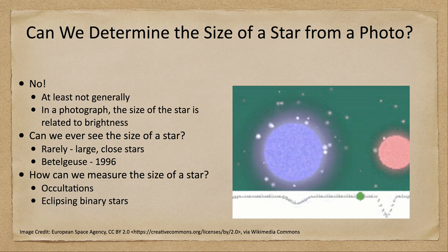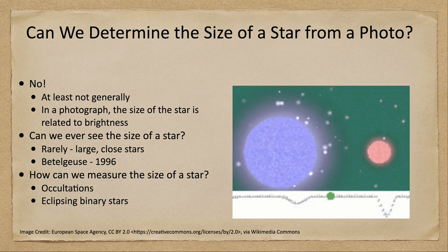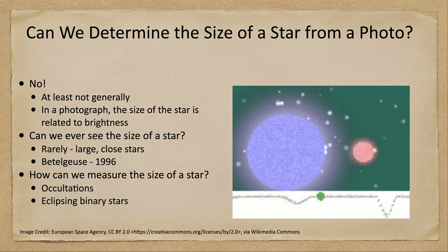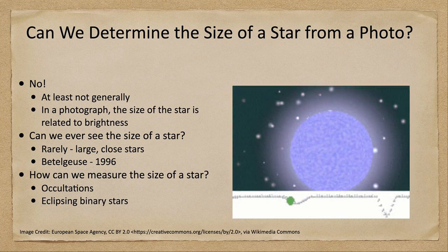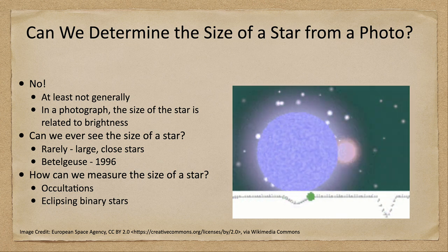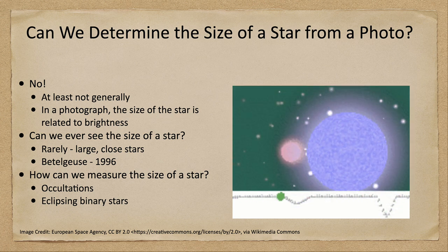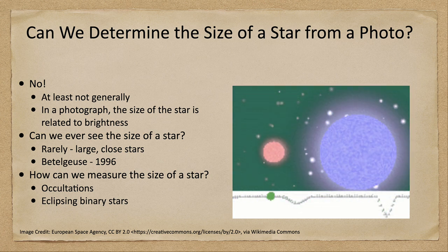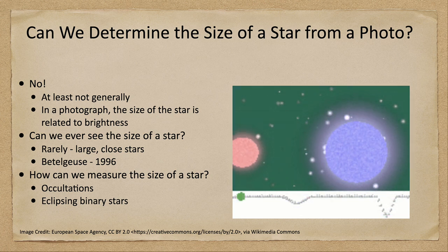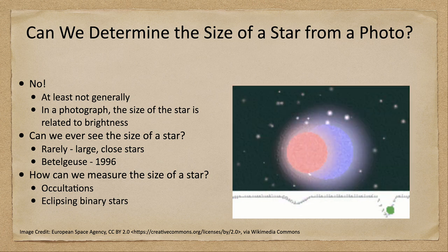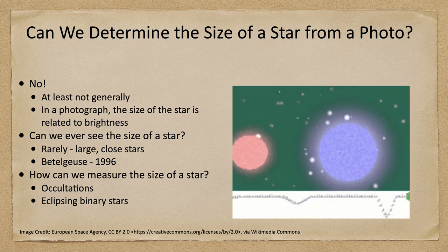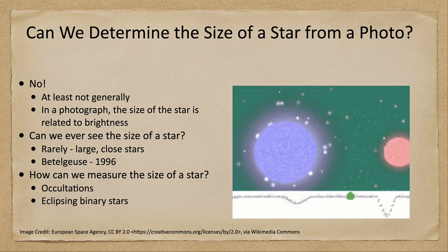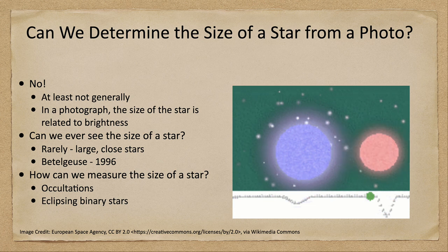How quickly the light curve dips tells us something about the sizes. The faster it drops to minimum, the smaller the star — a very small star will disappear quickly, a very large star more slowly. In the first dip we have a large star passing in front of the other, and in the second case we have the smaller, fainter star passing in front, which happens much faster. With multiple measurements we can get accurate estimates of how big those stars are.